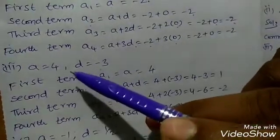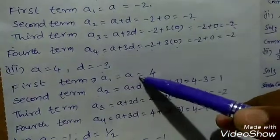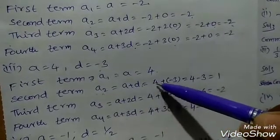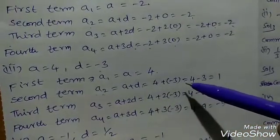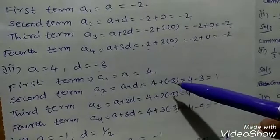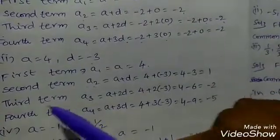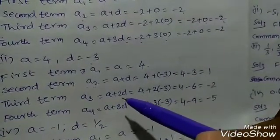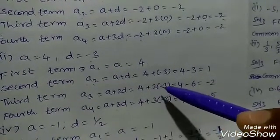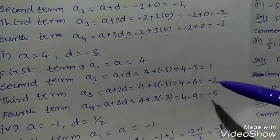Third problem: a equals 4, d equals minus 3. First term a1 equals 4. Second term a2 equals a plus d, that is 4 plus minus 3, which equals 4 minus 3 equals 1. Third term a3 equals a plus 2d, that is 4 plus 2 into minus 3. Since plus into minus is minus, 2 times 3 is 6, so 4 minus 6 equals minus 2.